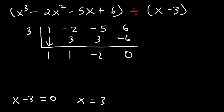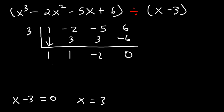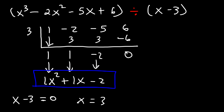So what does this all mean? x cubed divided by x is x squared, so the first number is the coefficient for x squared. We have 1x squared, then plus 1x, with a constant of negative 2. So x cubed minus 2x squared minus 5x plus 6 divided by x minus 3 gives us x squared plus x minus 2.